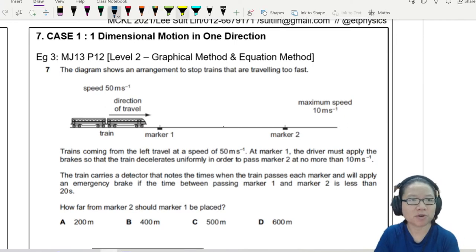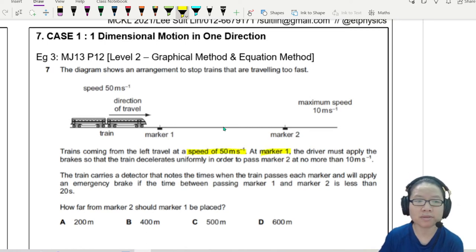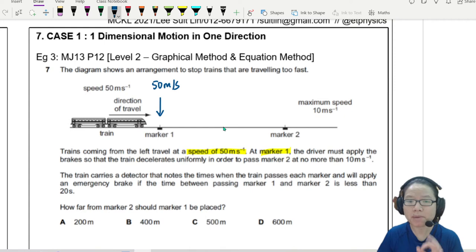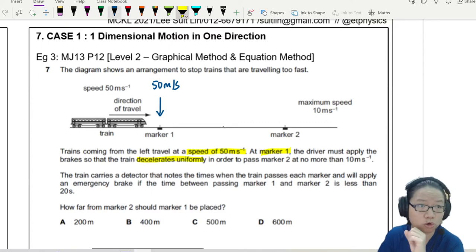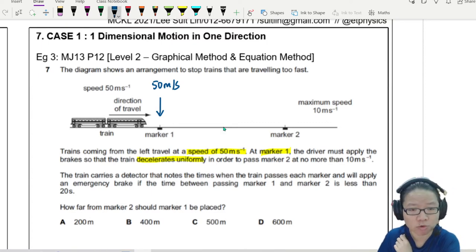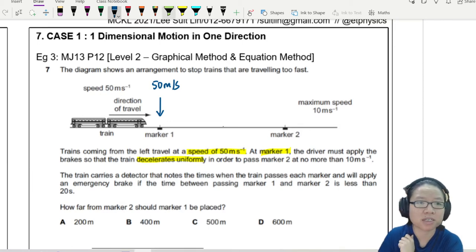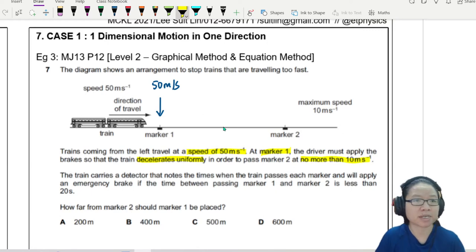Train coming from the left at a speed of 50 meters per second at marker 1. So this means by the time it reaches marker 1 here, the speed is 50 meters per second. The driver must apply the brakes so that the train decelerates uniformly. So this is another cue to use your STUVA equation, kinematics equation of motion, in order to pass marker 2 at no more than 10 meters per second. So by the time I reach, the speed cannot exceed 10 meters per second.